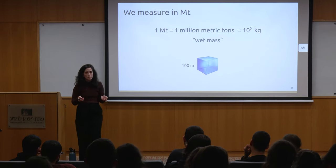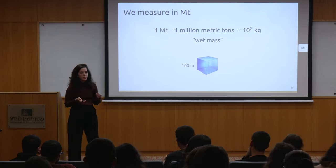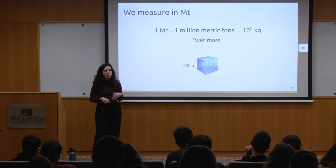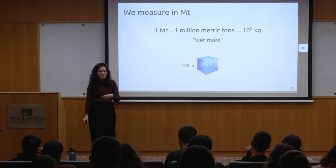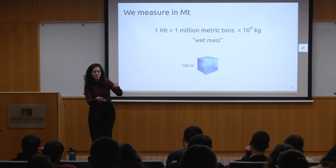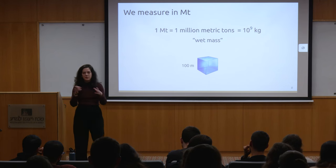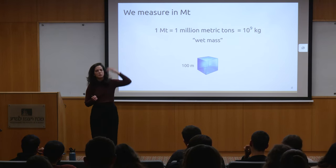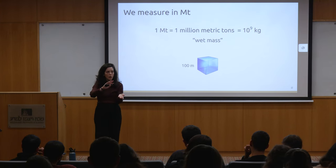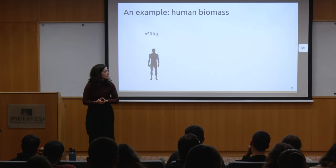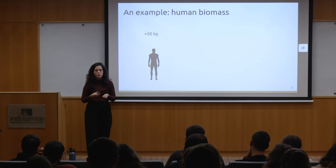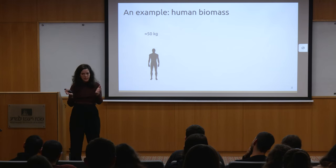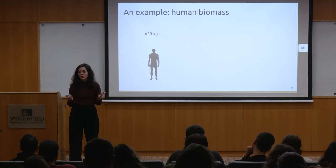The units we're going to use are megatons - one megaton is 10 to the 9 kilograms, in units of wet mass, like what we see on a scale. To imagine a megaton, picture a cube that's 100 meters tall, 100 meters wide, and 100 meters long filled with water - that would weigh one megaton. Now let's use this yardstick and think about biomass for the first time with humans. I want to calculate the total biomass of humans on Earth.